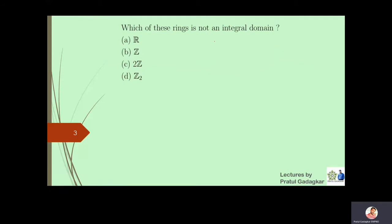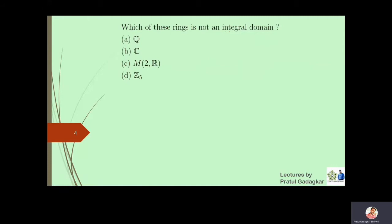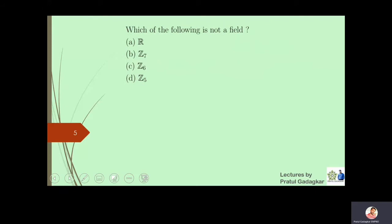The next question is which of these rings is not an integral domain. We clearly know that an integral domain is a commutative ring with unity. Here, 2Z has no unity, so 2Z will not be an integral domain. The following question again asks which ring is not an integral domain. M2R is a non-commutative ring, so M2R will not be an integral domain.